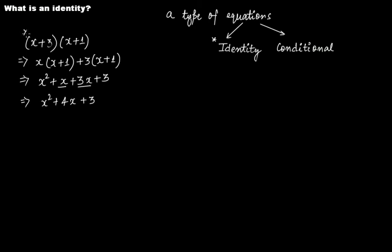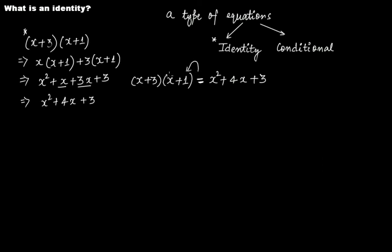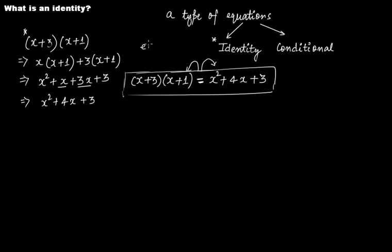It means that the expression (x + 3)(x + 1) is equal to x² + 4x + 3. Now since you have an equal sign, and to the left hand side of this equal sign you have the expression (x + 3)(x + 1), and to the right hand side you have another expression that is actually the simplified version of this one — that makes it an equation, or we can say an equality. What's special about this equality or equation?